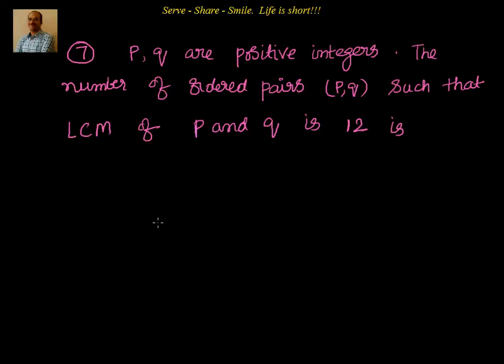We know that LCM is obtained by taking the product of all the factors with their highest powers. So let's first find the prime factorization of 12. The prime factorization of 12 is equal to 2² × 3¹.